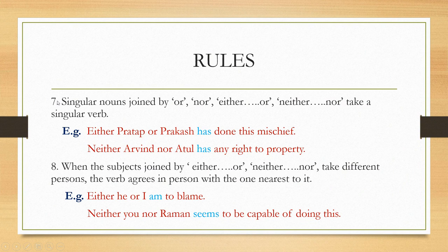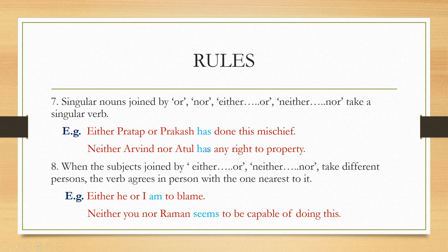Rule number 7. We are going to start from 7. Singular nouns joined by 'or', 'nor', 'either...or', 'neither...nor' take a singular verb. For example, 'Either Pratap or Prakash has done this.' These two nouns are joined by 'or', so we have to take a singular verb. This is a pair conjunction. When you join two words with a pair conjunction, you use a singular verb. 'Neither Arvind nor Atul has any right to property.' Arvind and Atul are joined by 'neither...nor', so we take the singular verb 'has'.